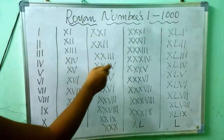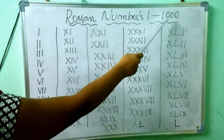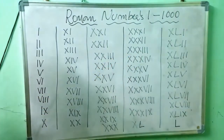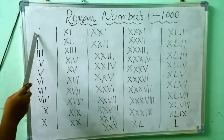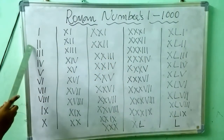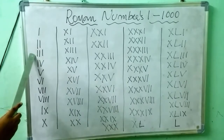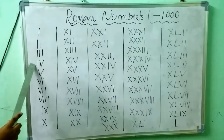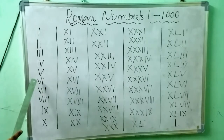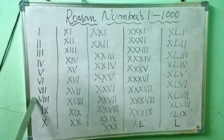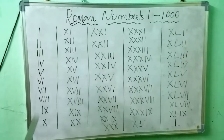Roman numbers 1 to 1000. Let's start. 1, 2, 3, 4, 5, 6, 7, 8, 9, 10.